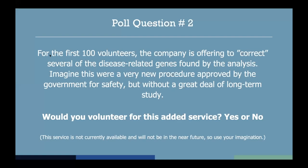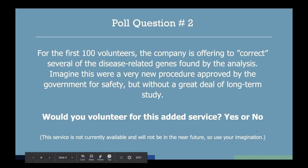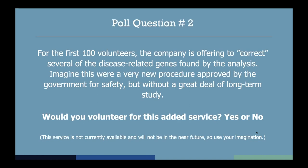I'm going to go ahead and end the poll and share results. A lot more people were interested in finding out what's wrong with them than getting it fixed. Some responses: 'I'm all about being a guinea pig.' 'I've had plenty of good years.' 'Depends on the severity and age of the disease — when's the onset?' 'If it was a matter of life or death, significant quality of life issues — maybe as a last ditch effort.'